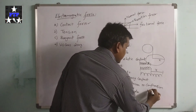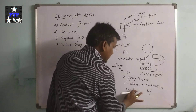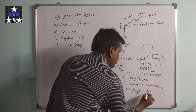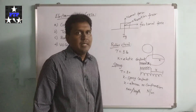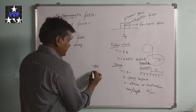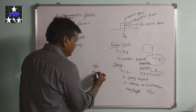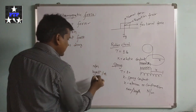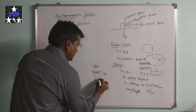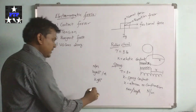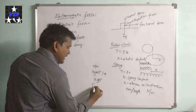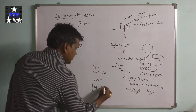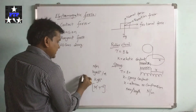For the spring, force is applied and the length changes — it may increase or decrease. So the spring constant is force per unit length, which is newton per meter (N/m). This can also be written as kg·m/s² divided by meter, which simplifies to kg/s². The dimensional formula for spring constant is M¹L⁰T⁻², and the SI unit is newton per meter (N/m).